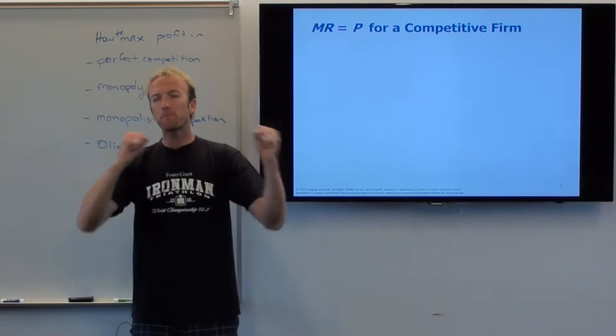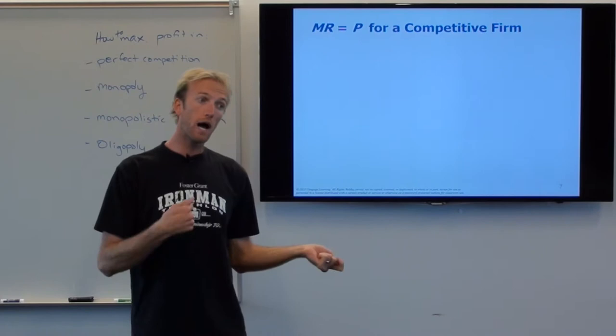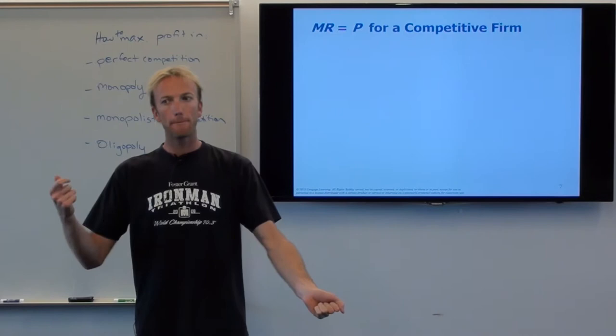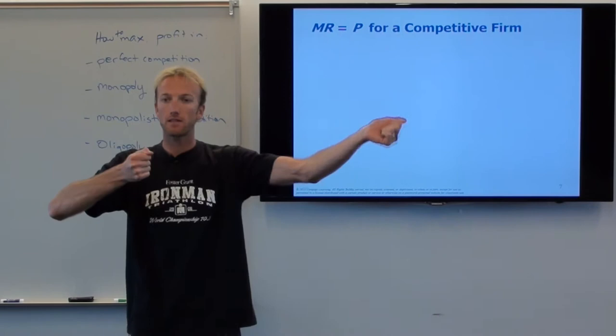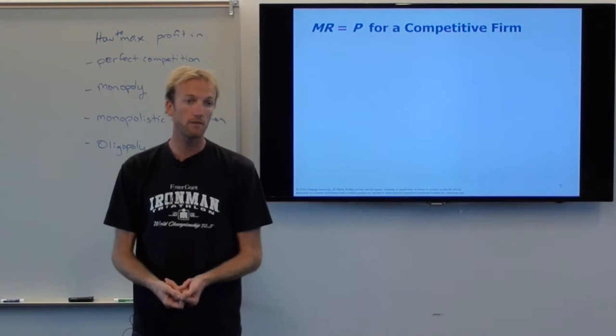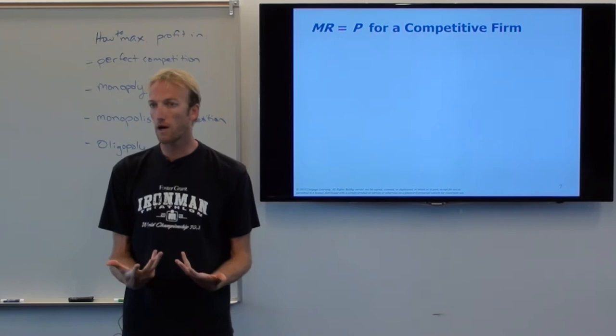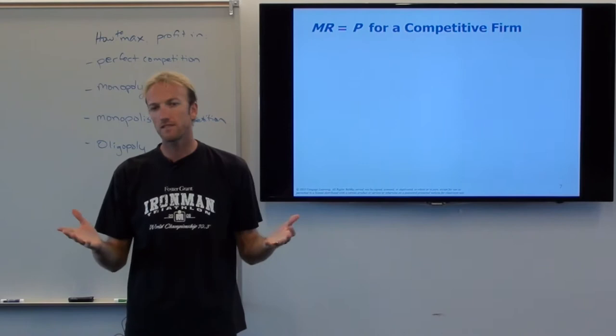Because marginal revenue equals P for a competitive firm, profit maximization becomes easy. Back in the cost chapter, I said you can make it simple: I'm making 10 tacos — should I make an 11th? What's my marginal cost to make taco number 11, and compare that to my marginal revenue, which is how much extra dollars I get for making taco number 11. If I get more dollars for making the taco than it costs me to make it, I should make it.